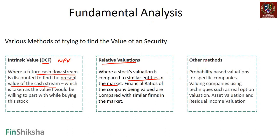The third method is what are called contingent methods — typically probability-based valuations of specific companies. These use techniques such as real option valuation, which are advanced techniques used in cases where you're not certain that the cash flows are going to materialize.